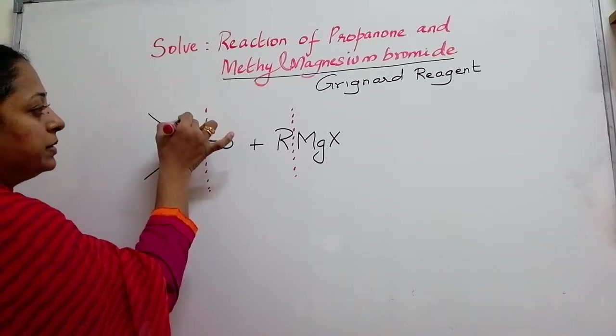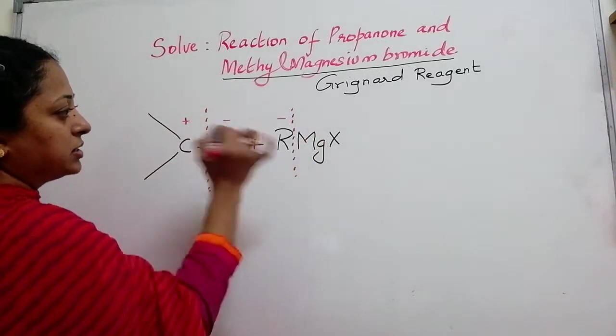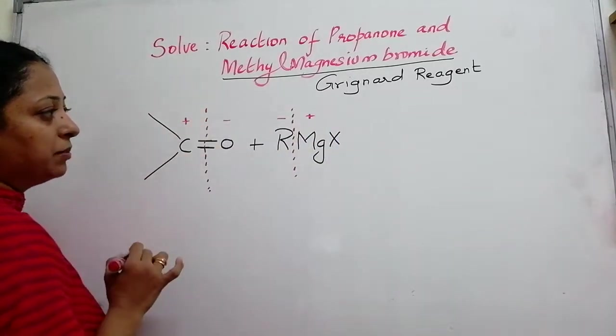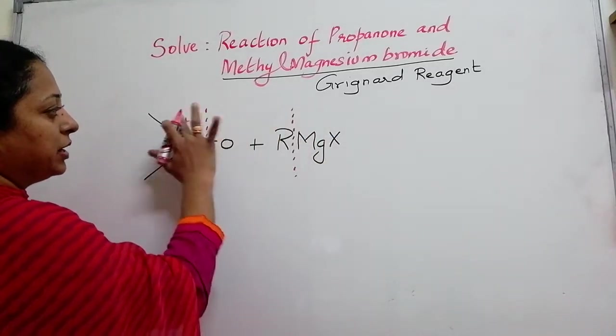We all know that Mg is plus and R is minus. I repeat, carbon is plus here, oxygen is minus whereas here R is minus whereas Mg is plus. I am just going to exchange the ions. So, let me do that.